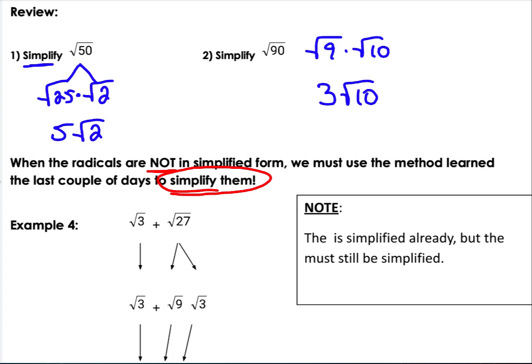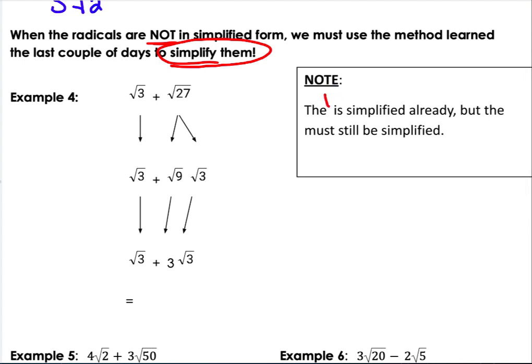For this one, there's a little typo here. The first is simplified, but the second must still be simplified. So 27 we broke into square root of 9 and square root of 3. Square root of 9 is 3, so I have 1 square root of 3 plus 3 square roots of 3.